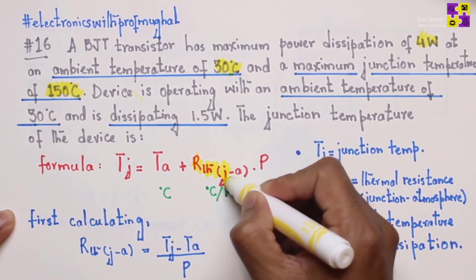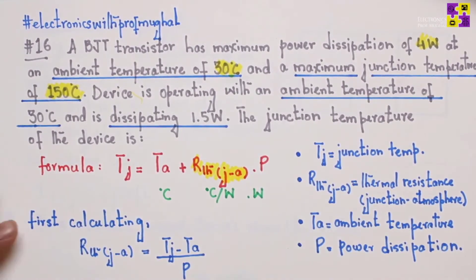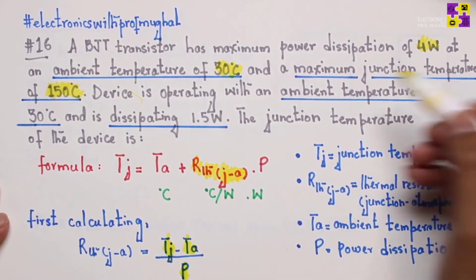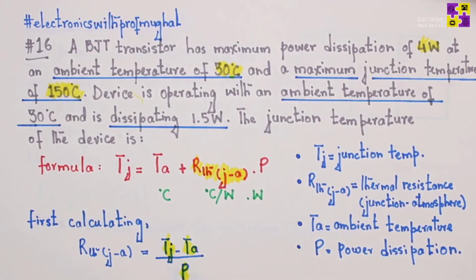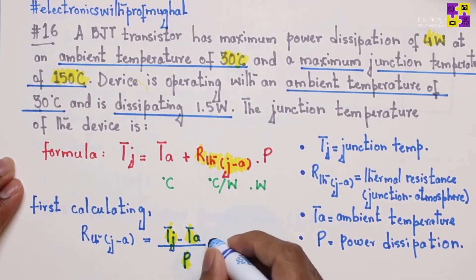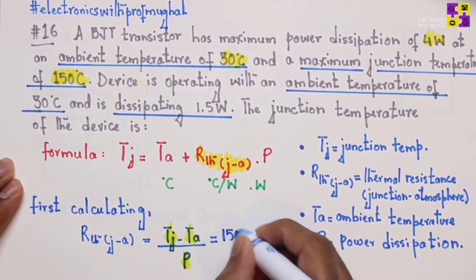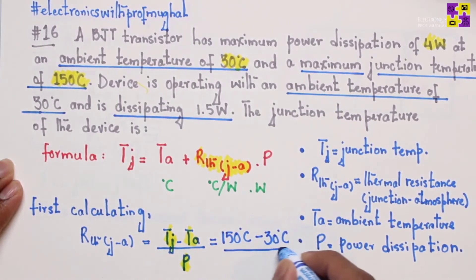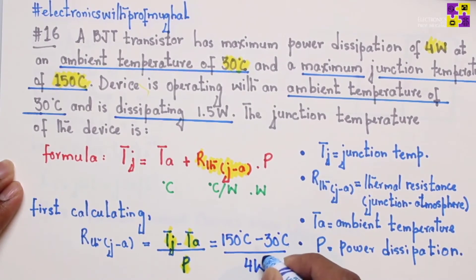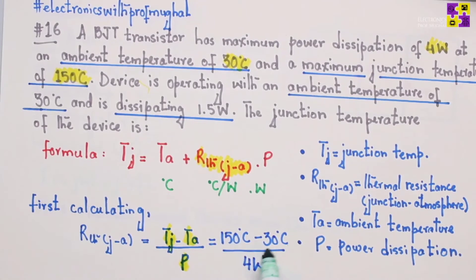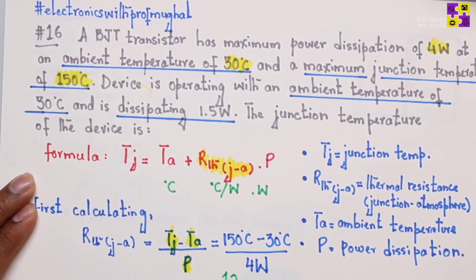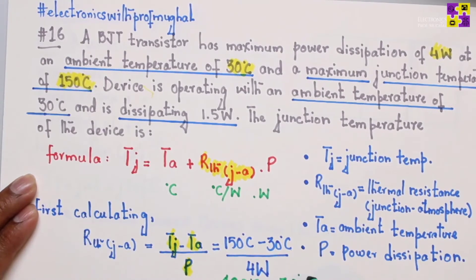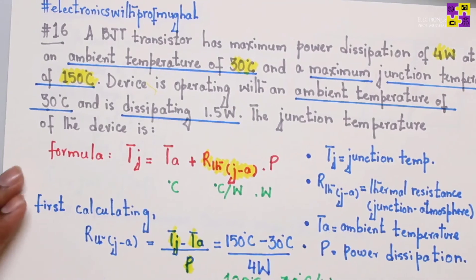There is one parameter missing which we need to find first — thermal resistance. The formula to calculate it is: thermal resistance = (T_J_max − T_A) / P. Plugging in the values: maximum junction temperature is 150°C, ambient temperature is 30°C, and power is 4 watts. So we get (150 − 30) / 4 = 120 / 4 = 30 degrees centigrade per watt.